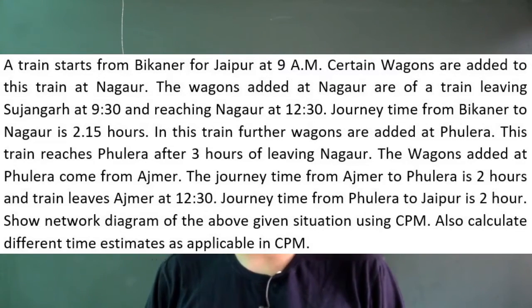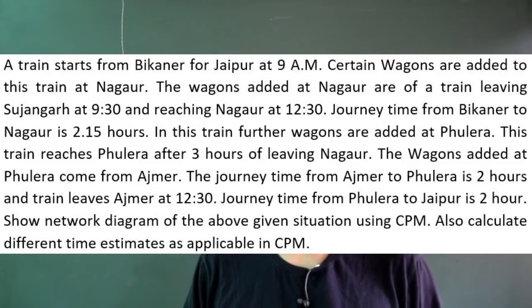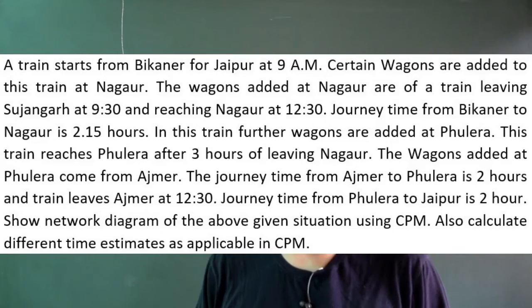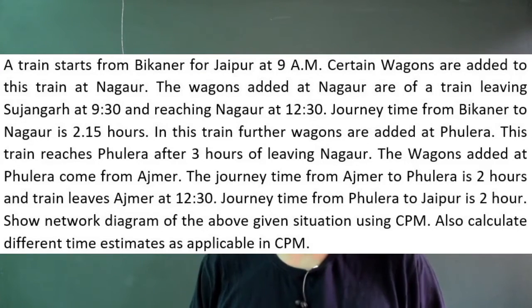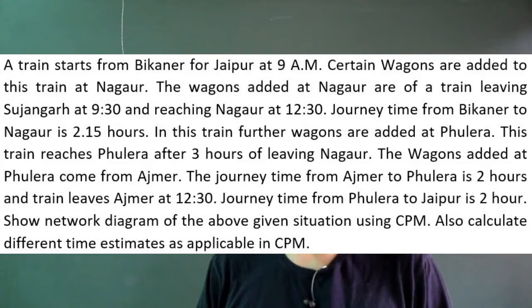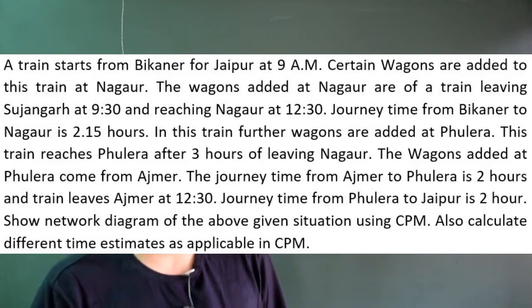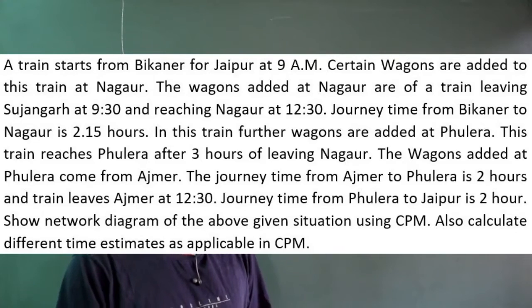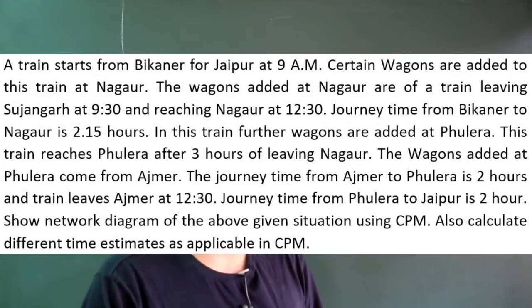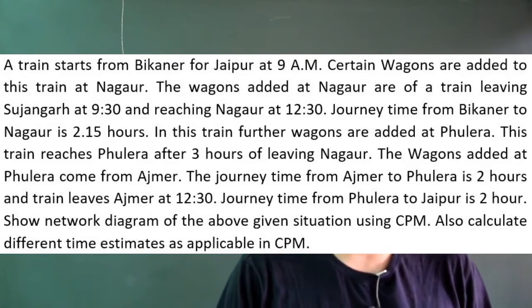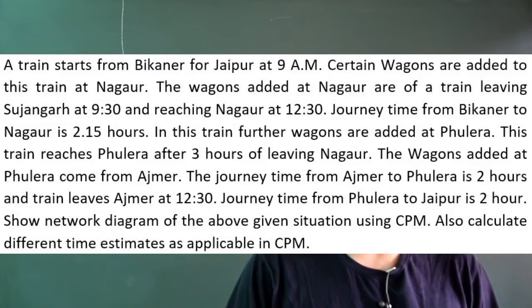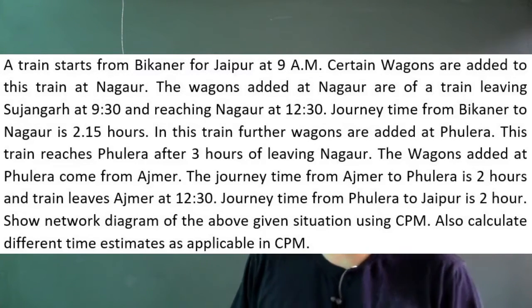Probably now you have gone through this question. This question looks different from our conventional questions where we have activities as A, B, C, D with their predecessors. This is different. A train starts from Bikaner for Jaipur at 9 AM, another train starts from Sujanagad at 9:30, so it is a different scenario.